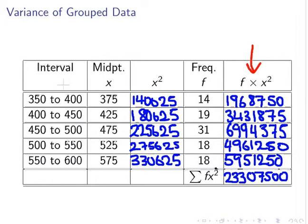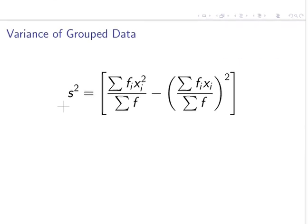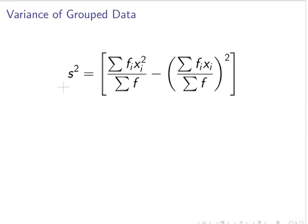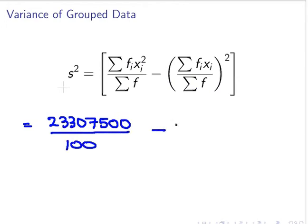So we're going to save that. And now what we're going to do is move on. We're going to calculate the variance. And we're just going to put all our numbers together. So we have, this is equal to 23307500. And we're going to divide that by 100.